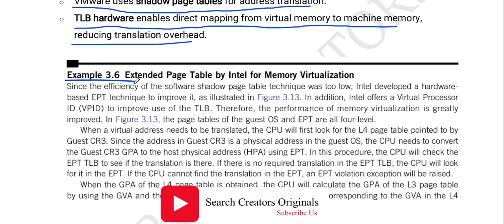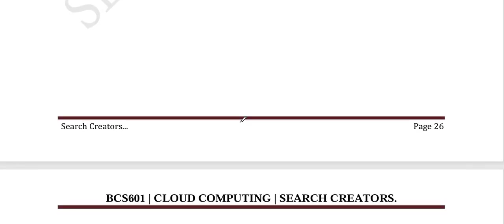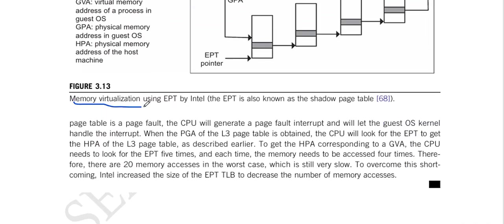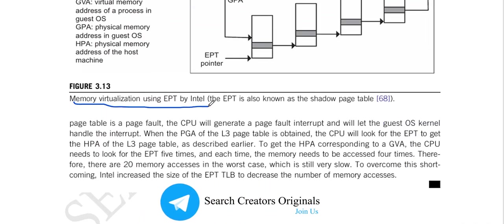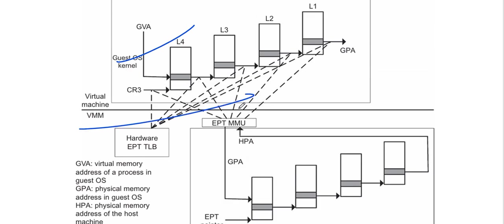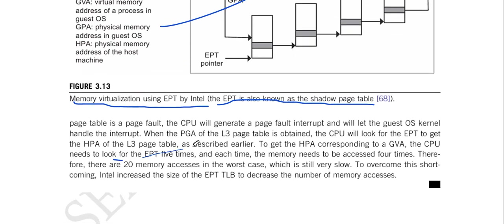In this example, we can observe extended page tables (EPT) by Intel for memory virtualization; theory content is given below. In the figure, we can observe memory virtualization using EPT by Intel. EPT is also known as the shadow page table. Theory content regarding the shadow page table and base table is given below.